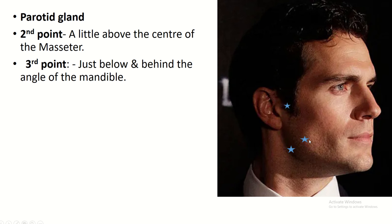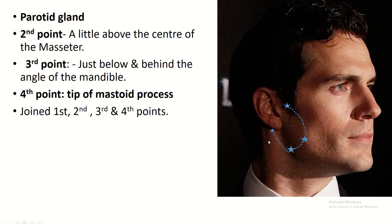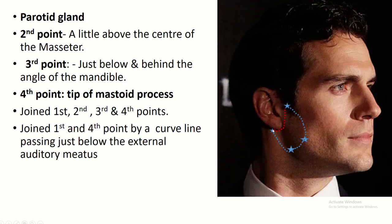The third point is just below and behind the angle of the mandible, and the fourth point is the tip of the mastoid process. Now join the first, second, third, and fourth points, and then join the fourth point with the first point by a curved line just below the external auditory meatus.